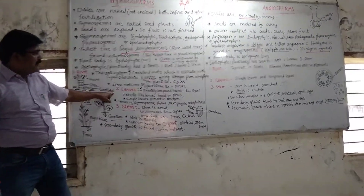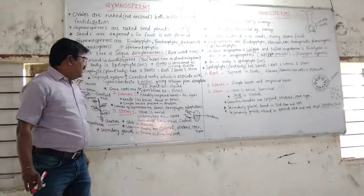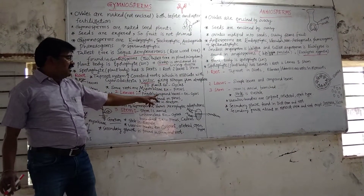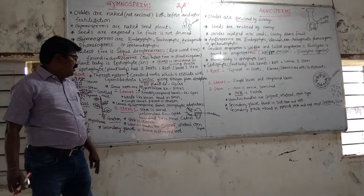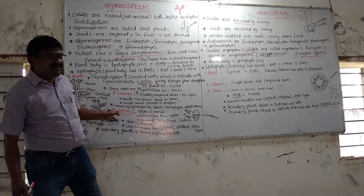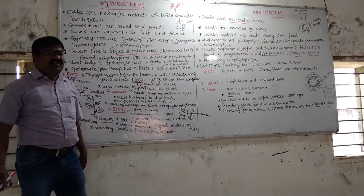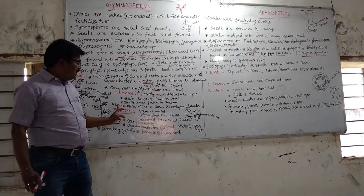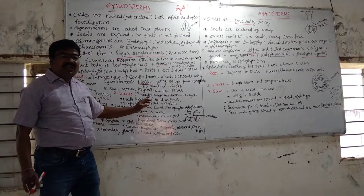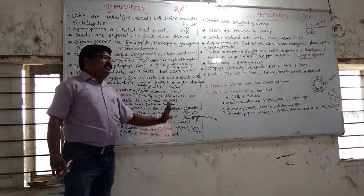Leaves in angiosperms can be simple or compound. In gymnosperms, leaves are needle-like, showing xerophytic adaptations. Gymnosperms show xerophytic adaptations, with sclerophyllous and succulent types of leaves.